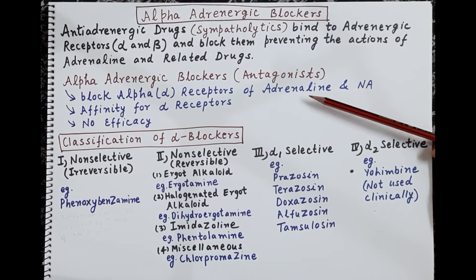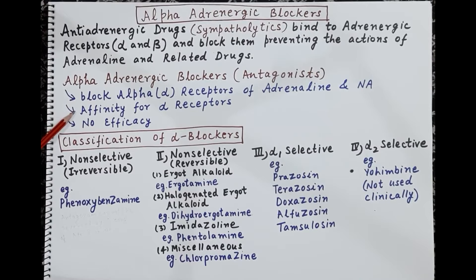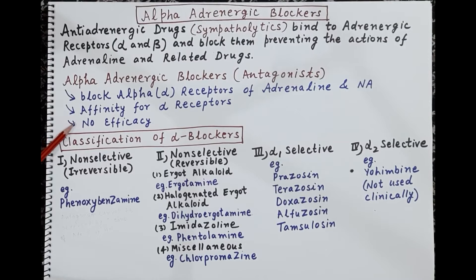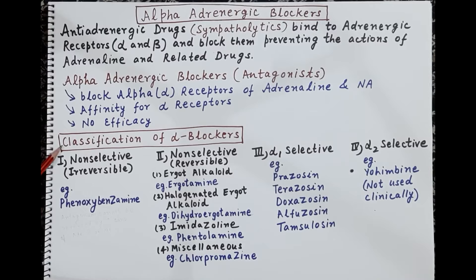Alpha adrenergic blockers or alpha adrenergic antagonists are drugs that block alpha receptors. They show affinity — they are capable of binding to alpha receptors — but after binding, they show no efficacy, meaning they are not capable of producing their own pharmacological action. They are only capable of antagonizing the action of adrenaline or other adrenergic drugs.